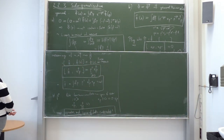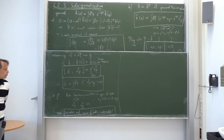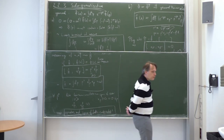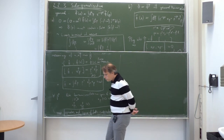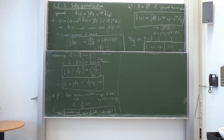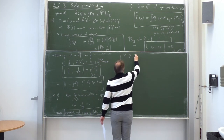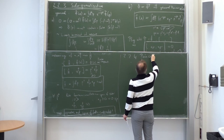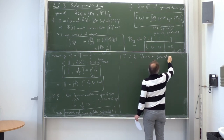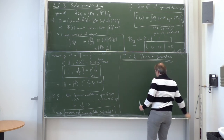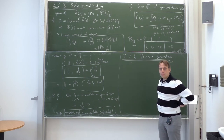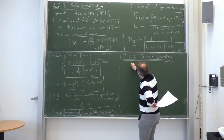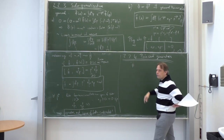We obtain the Poincaré generators from the Noether theorem, which guarantees conserved quantities related to Poincaré invariance. That is section 2.2.4 on Poincaré generators. We go to Noether's theorem and construct those conserved currents. We need to write our field transformation in a certain way — Poincaré transformations give a continuous transformation of the field.